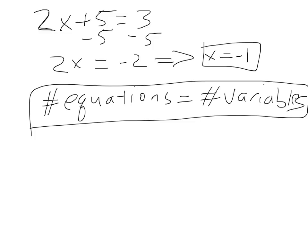In the example above, we had one variable, x, and one equation, and so we were able to solve it. If the number of equations does not equal the number of variables, we have a problem and likely cannot solve it. So let's say 2x plus 5 minus y is equal to 3.